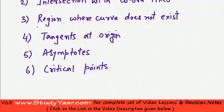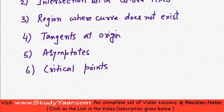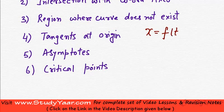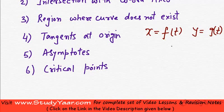Next point is region where curve does not lie. This you can simply analyze by looking at the equations x is equal to f(t) and y is equal to g(t). Look for scenarios where x is imaginary or y is imaginary. So these are the regions where your x and y does not exist.